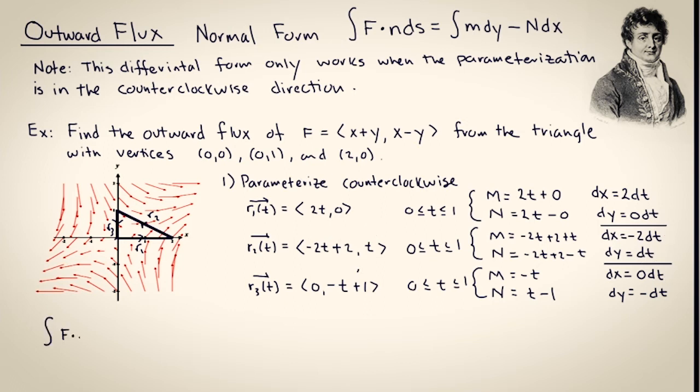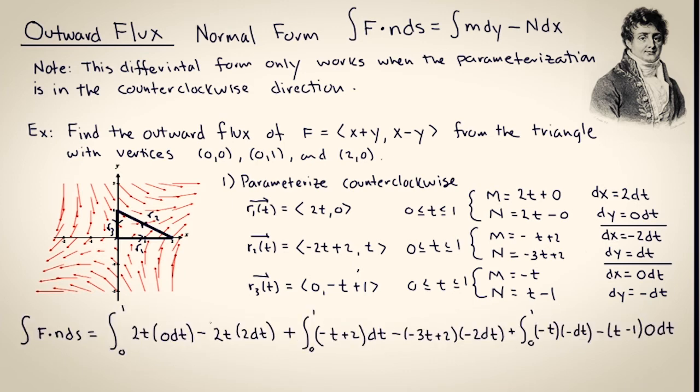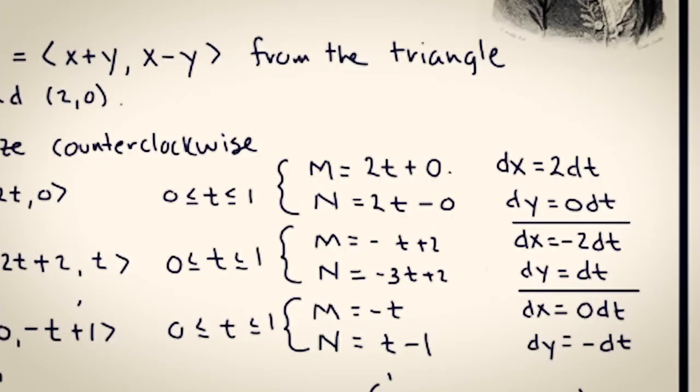Now I'm using additivity and setting up all of the differential forms for each leg of this triangle. Let's check the details that I set up the differential form along R1 correctly. I'm using m dy minus n dx. So m times dy minus n times dx.